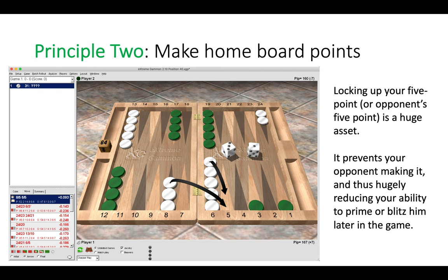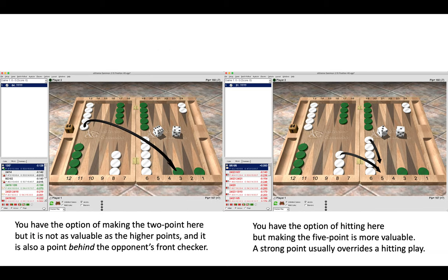Here you make the five point. Often you need a very good reason to not make the five point. If we compare those two positions that we've just looked at, with the six-four we of course have the option to make the two point instead of hitting, but the two point is a deep point and it's not as valuable as the higher points in white's home board such as five and four.